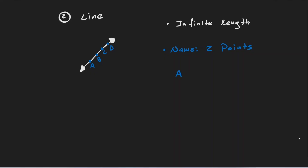But we have to talk about notation. The way that we indicate that these points are on a line is by putting a line on top of the two points. So this is the correct way to name this line — we can refer to this as line AB. This is not the only name we can give this line. I could have also chosen point A and point C, so I can call this AC with the arrow notation on top. I could have chosen point A and point D, giving it the name AD.